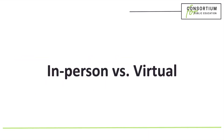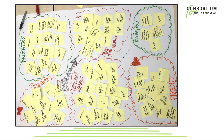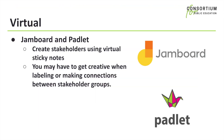Now, let's talk in-person versus virtual. If you're working in person, you can use sticky notes to create individual stakeholders along with either a whiteboard or several sheets of flipchart paper. Here's an example of an early draft of a stakeholder map. If you're working virtually, you can use Jamboard or Padlet and create stakeholders using virtual sticky notes. However, you may have to get creative when labeling or making connections between stakeholder groups.